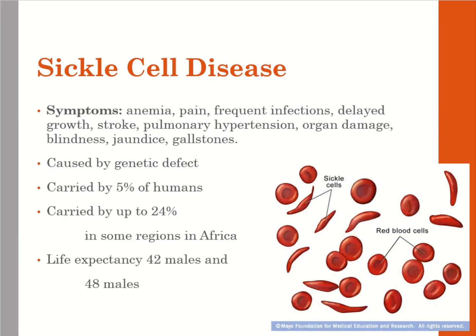In sickle cell disease, there are many symptoms including anemia, pain, infections, delayed growth, strokes, pulmonary hypertension, organ damage, blindness, jaundice, and gallstones — all caused by this genetic defect. Sickle cell is carried by 5% of humans globally, and in some regions of Africa it's carried by up to 24% of the population. Life expectancy is 42 years in males and 48 years in females.